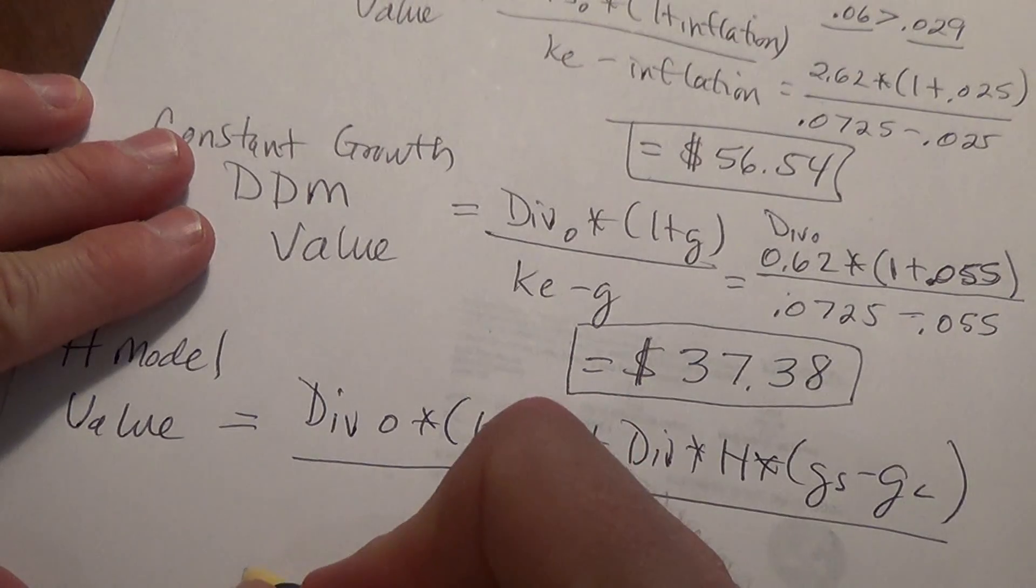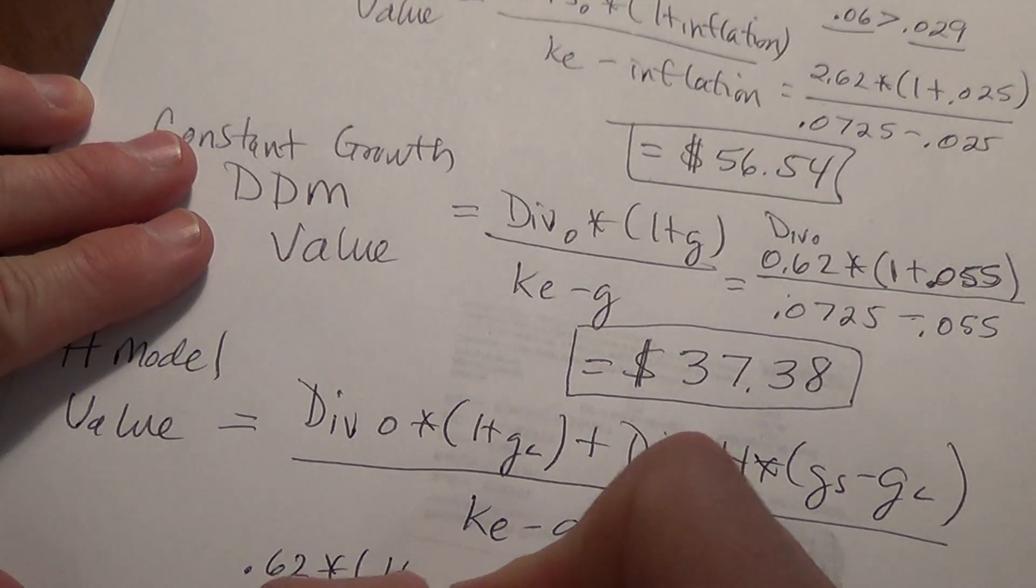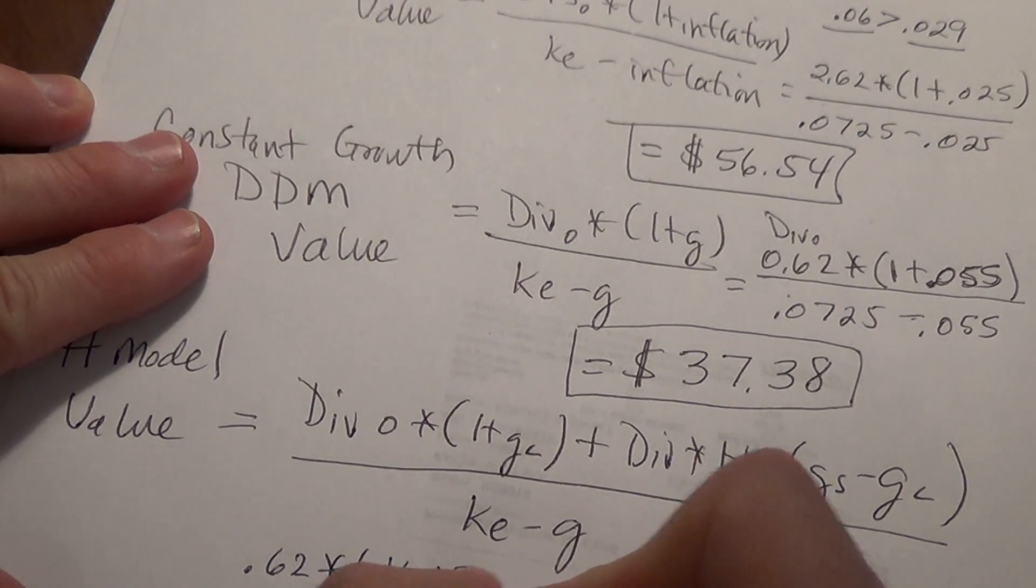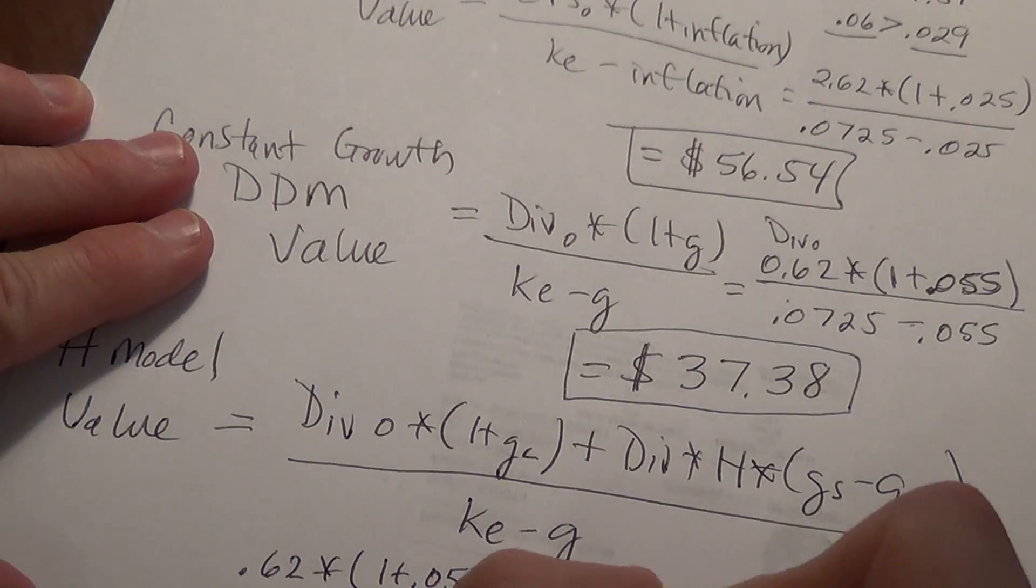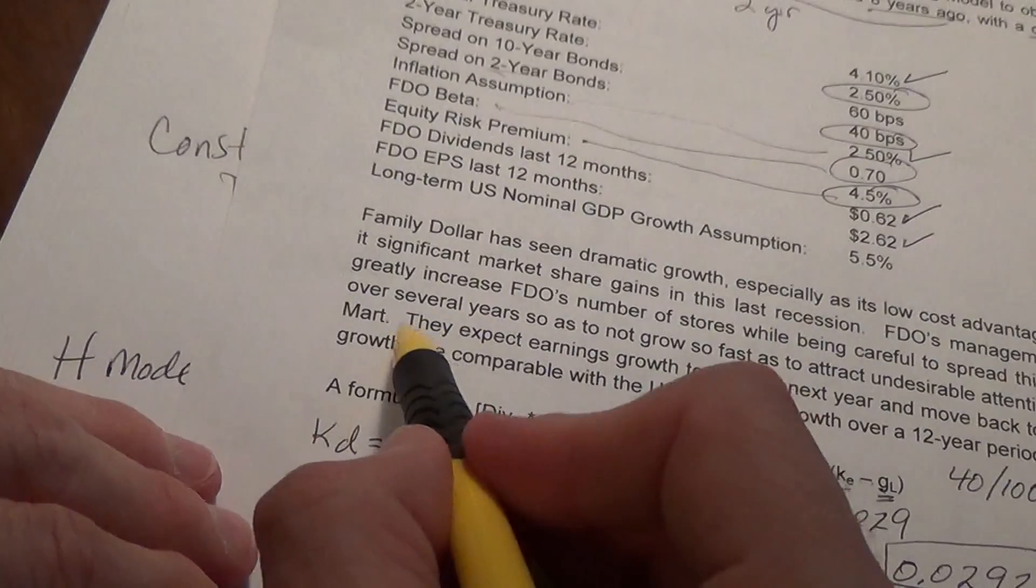So our dividend 0 is 0.62. Our long term growth rate is the same as we used before, so we multiply 1 by 1 plus 0.055. We then add $0.62 again for dividend. Now the H is implied here in this last sentence.